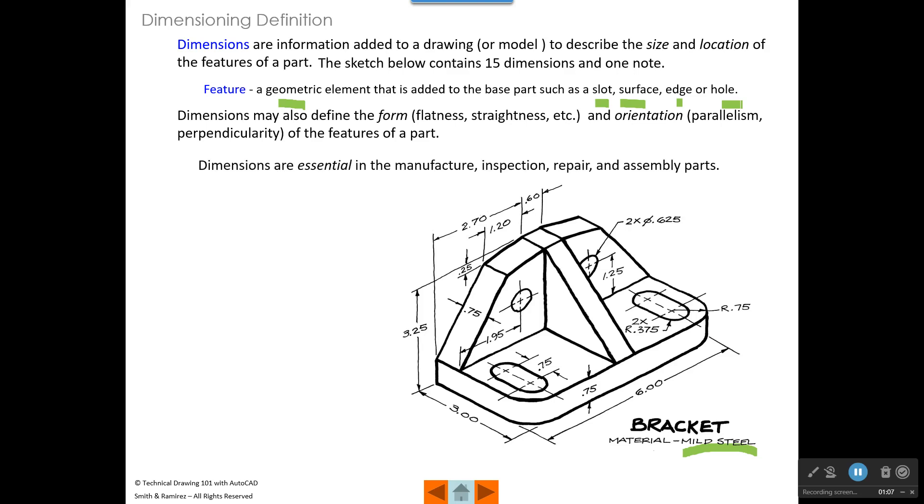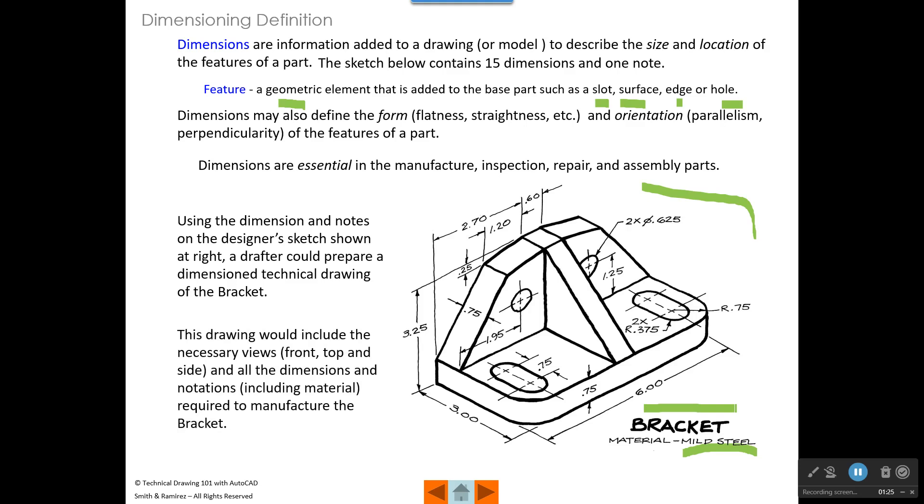Dimensions are essential in the manufacture, inspection, repair, and assembly of parts. Using the dimensions shown on the sketch at right, a drafter could prepare a dimensioned technical drawing of the bracket. This drawing would include the necessary views like the front, the top, and the side and all the dimensions and notations, including material required to manufacture the bracket.